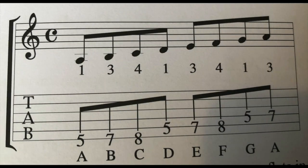I will now discuss the A minor scale. Like the major scale, this scale also has seven notes. The intervals that make up the minor scale are: whole, half, whole, whole, half, whole, whole. The minor scale contains the notes A, B, C, D, E, F, G and A. I will now demonstrate how you play the A minor scale on guitar.